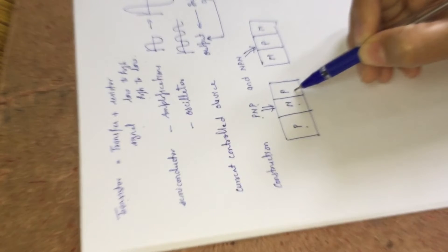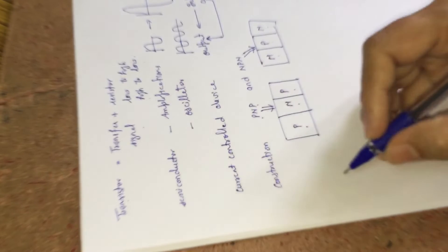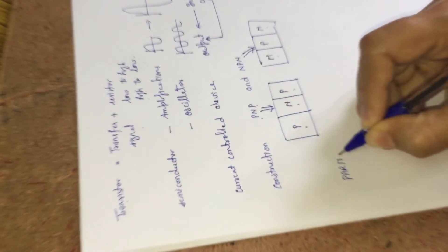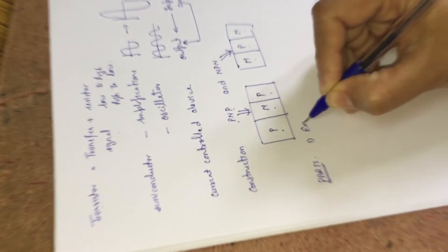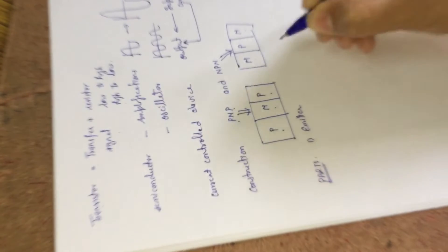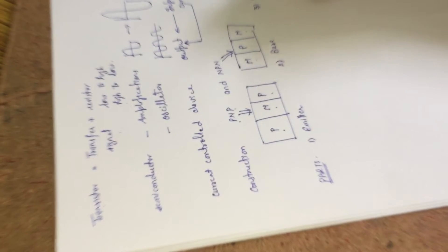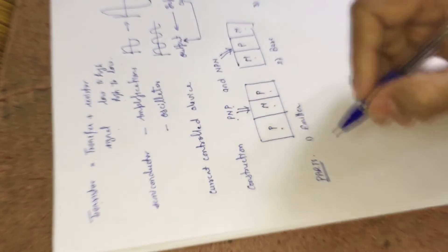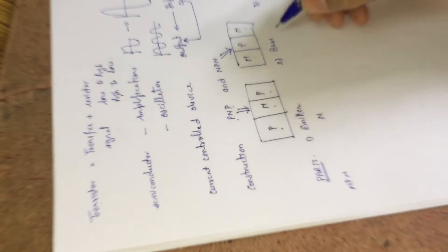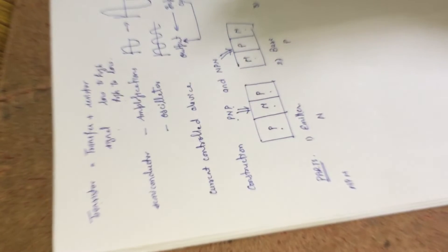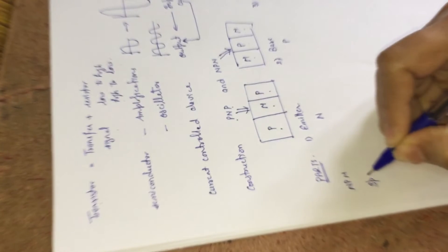There are three parts in both PNP and NPN transistors. The three main parts of a transistor are: one is known as emitter, another is known as base, and the third region is known as collector. In an NPN transistor, the emitter is N-type semiconductor, the base is P-type semiconductor, and the collector is N-type semiconductor.